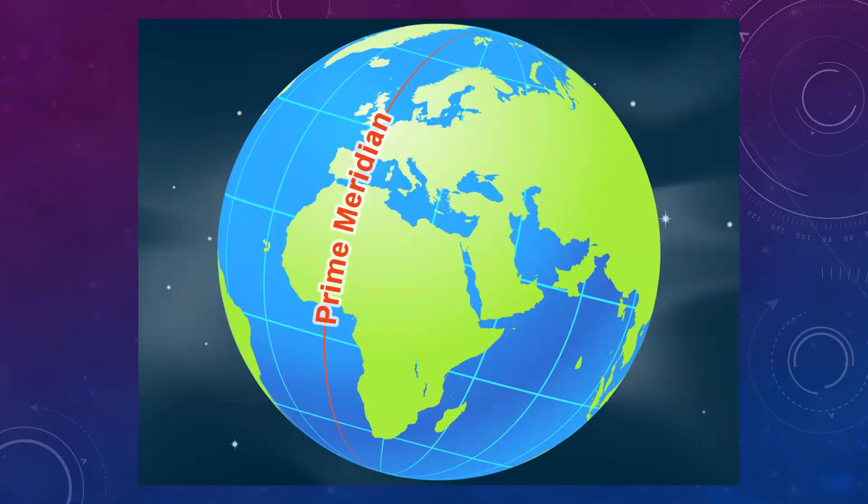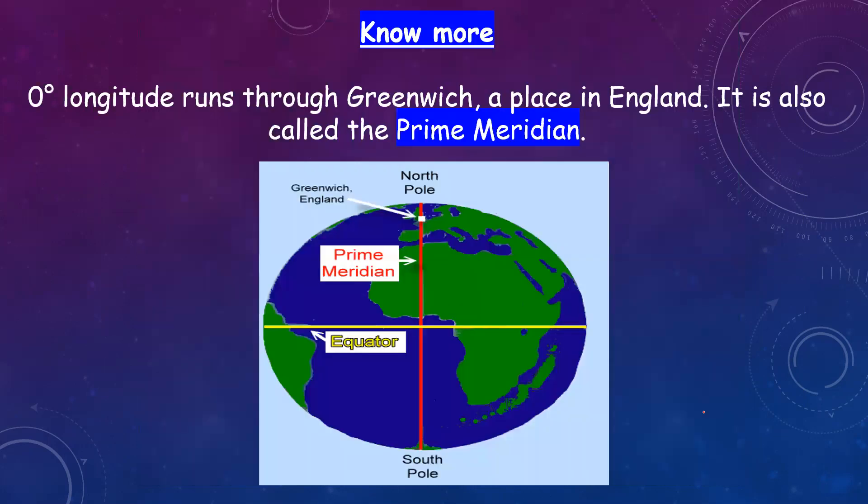The zero degree line of longitude is also called the Prime Meridian. Zero degree longitude runs through Greenwich, a place in England.